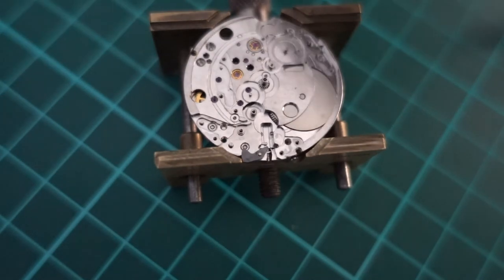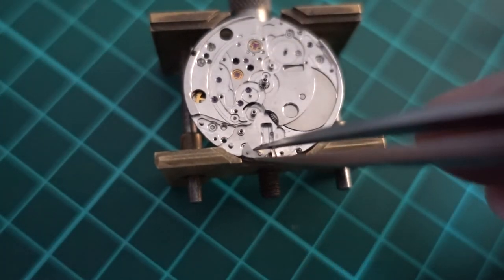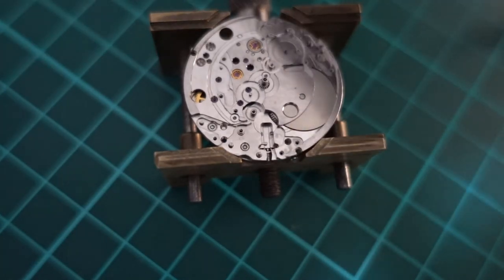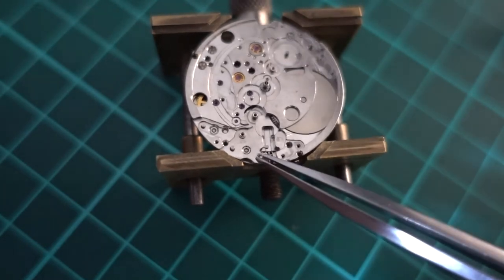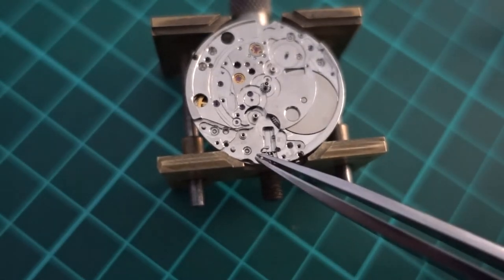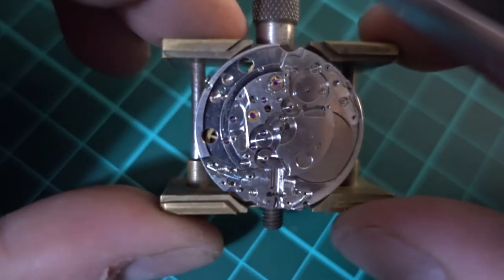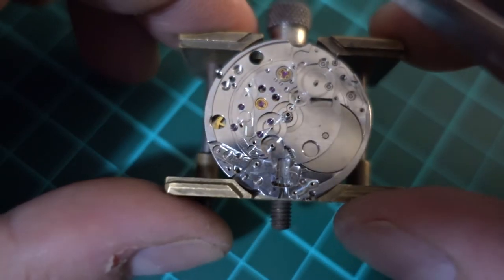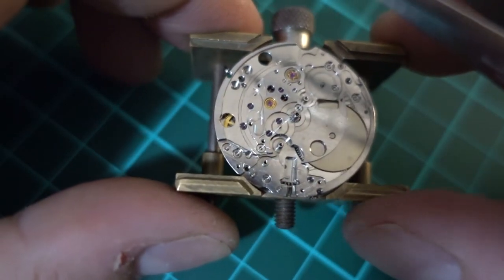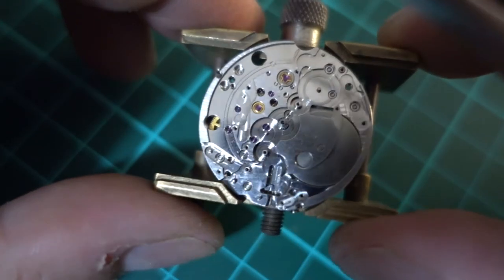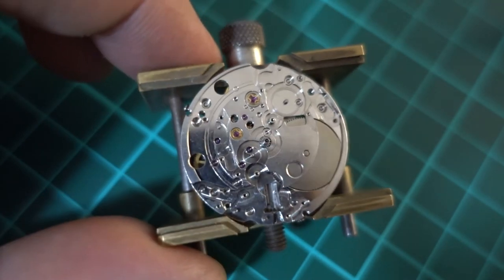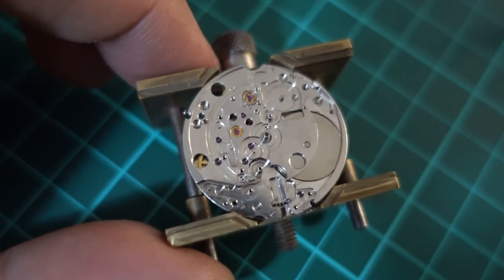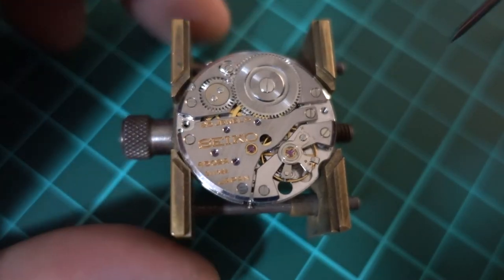That's the intermediate wheel coming off there. These movements, if you don't already know, they tick at 36,000 beats per hour, which is exceptionally high. So that means they beat ten times per second, and yes I did work that out by calculator just to make sure that I didn't make a mistake. I already knew that but I just wanted to double check it.